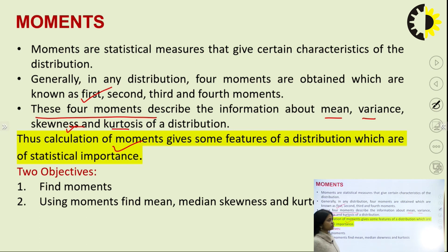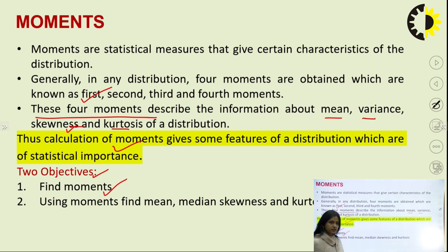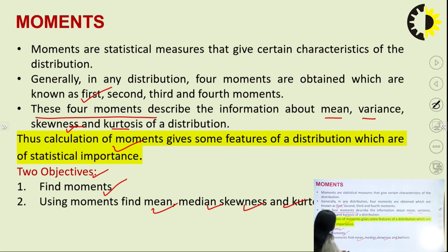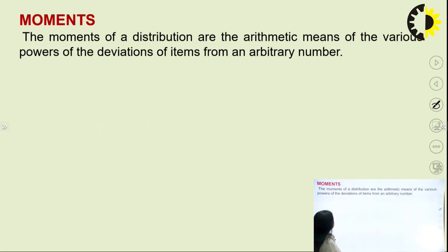In this session, we have two objectives. First, we will find the moment of a given distribution. And then using these moments, we can find the mean, skewness, and kurtosis of the given distribution. Let us see how we can define the measure known as moment.